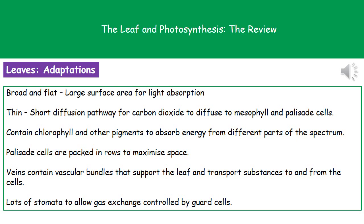Cells inside the leaf contain chlorophyll and other pigments. It's not just one pigment inside the chloroplasts — there is chlorophyll and several others. The purpose behind that is to absorb as much energy from different parts of the spectrum as possible.